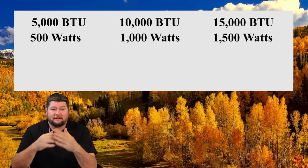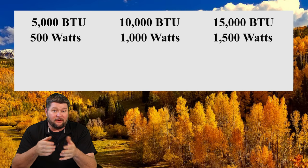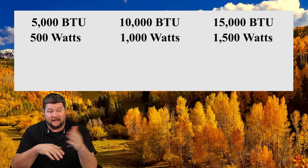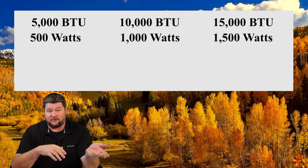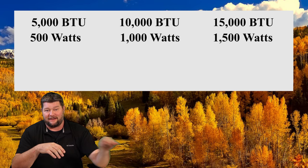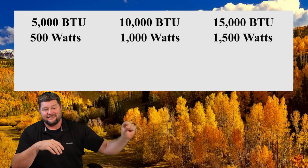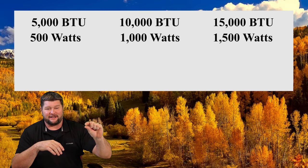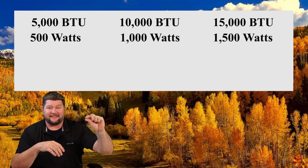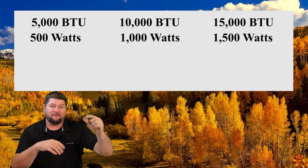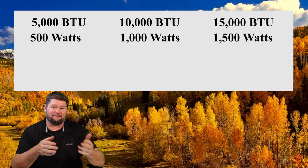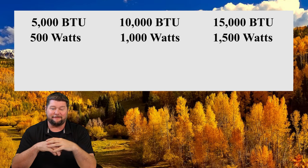Now, to get a little more involved, if you want to know about amperage — the wattage was very simple, so now we all know that: 5,000 BTU is 500 watts, 10,000 BTU is 1,000 watts, 15,000 BTU is 1,500 watts. Simple enough.